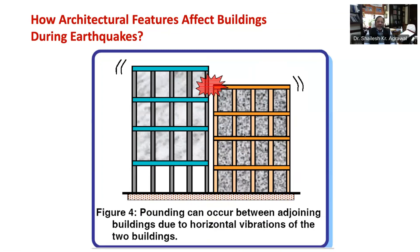Architectural features are normally introduced with a desire to create an aesthetic and functionally efficient structure. Sometimes the shape of the building catches the eye of the visitor, sometimes the structural system, and in other occasions both shape and structural system work together to make the structure a marvel. Nevertheless, each of these choices has significant bearing on the performance of the building during a strong earthquake. The damages during past earthquakes across the world have been very educating in identifying shapes and structural configurations that are desirable versus those which must be avoided. We will continue to make buildings interesting, but this need not be done at the cost of poor behavior and earthquake safety. Architectural features that are detrimental to earthquake resistance should be avoided, or if not, at least minimized.